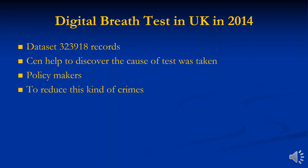The next dataset is about digital beauty tests in the UK, which contains 323,918 records. This data can help policymakers set new policies to reduce that type of crime.